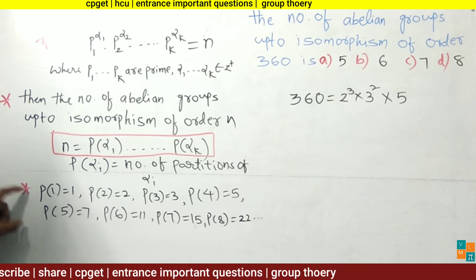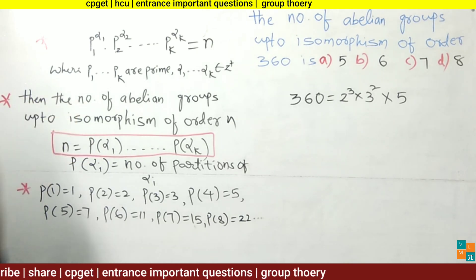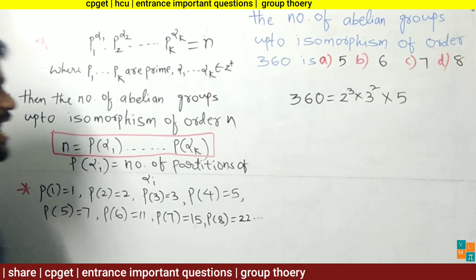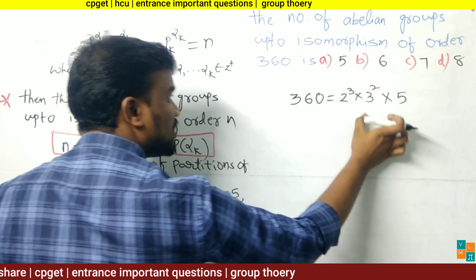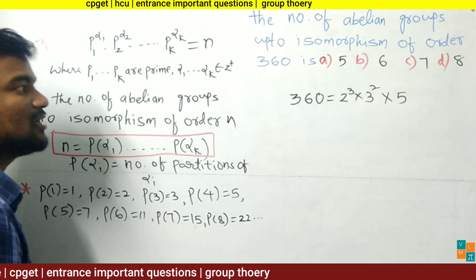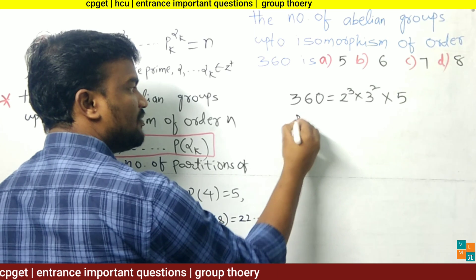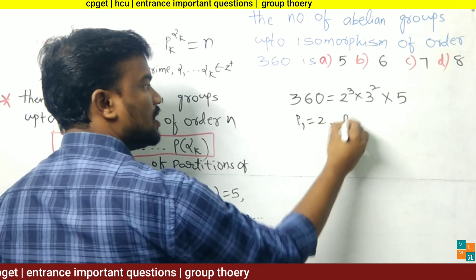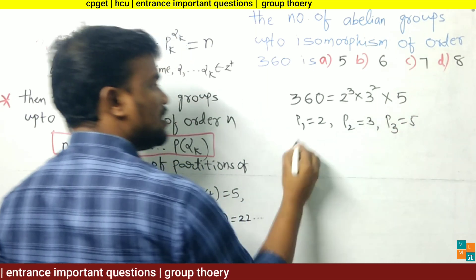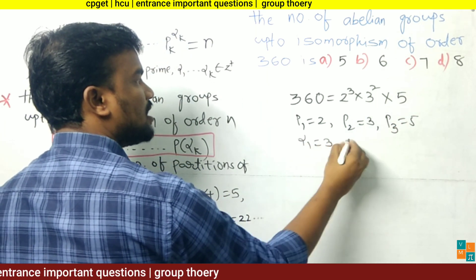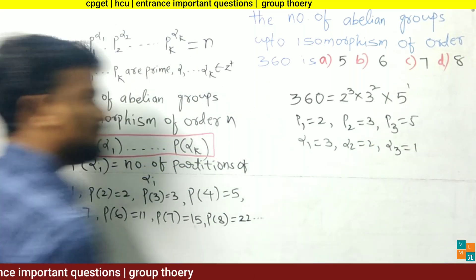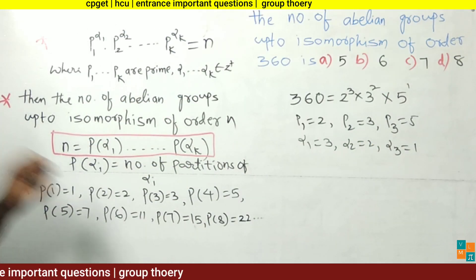Now, 360 is a positive integer. Its prime factorization is 360 = 2³ × 3² × 5¹, so P₁=2, P₂=3, P₃=5, and α₁=3, α₂=2, α₃=1.